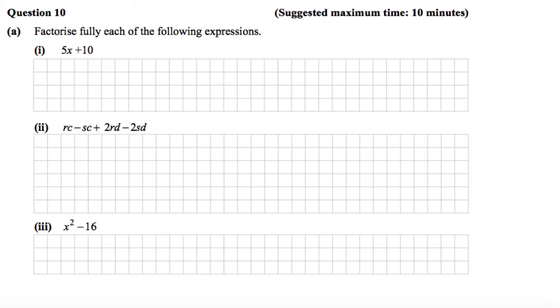This is the Junior Cert Ordinary Level Paper 1 from 2014, and we're looking at question number 10. Part A says, factorise fully each of the following expressions.